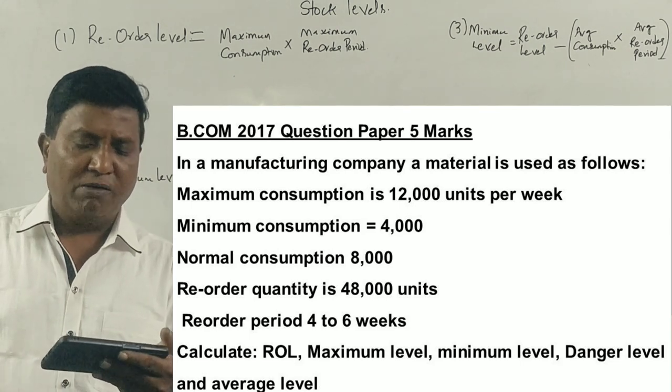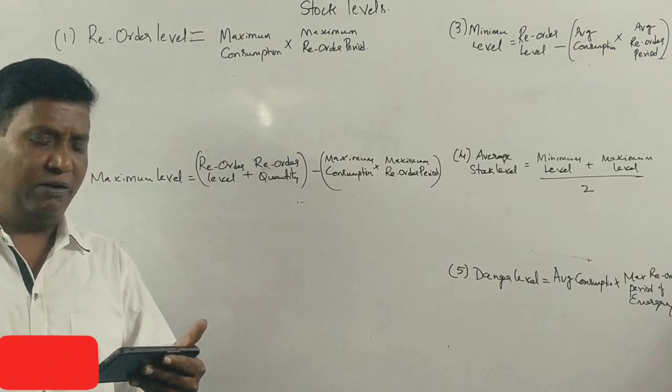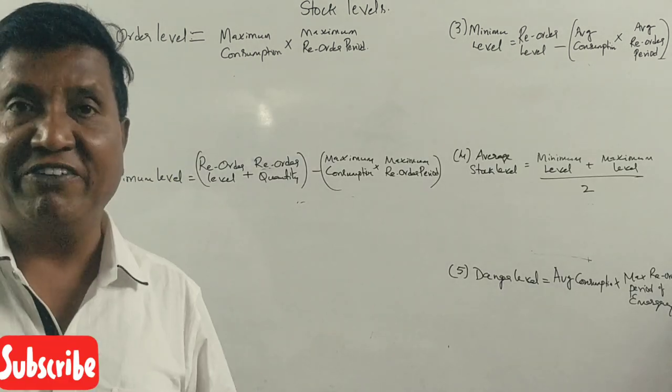Time required for delivery, minimum 4 weeks, maximum 6 weeks. Calculate reorder level, minimum level, maximum level, danger level, average stock level.